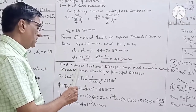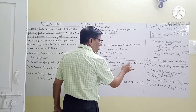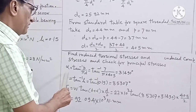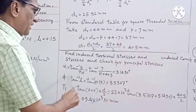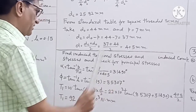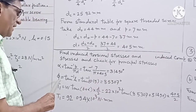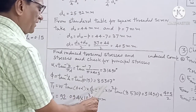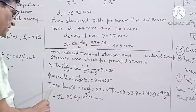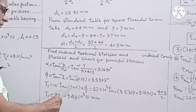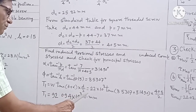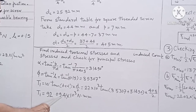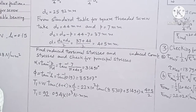Now we find the induced torsional stresses and induced compressive stresses, and check for principal stresses. The helix angle α comes out to be 3.1490 degrees. The friction angle φ, from the relation tan inverse of μ, comes out to be 8.5307 degrees. From the relation T1 equals W·tan(φ + α)·(D/2), the torque T1 comes out to be 92.094 × 10³ N·mm.